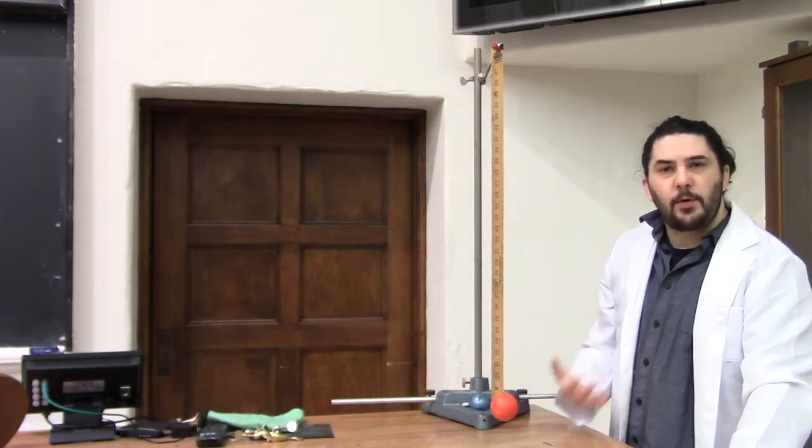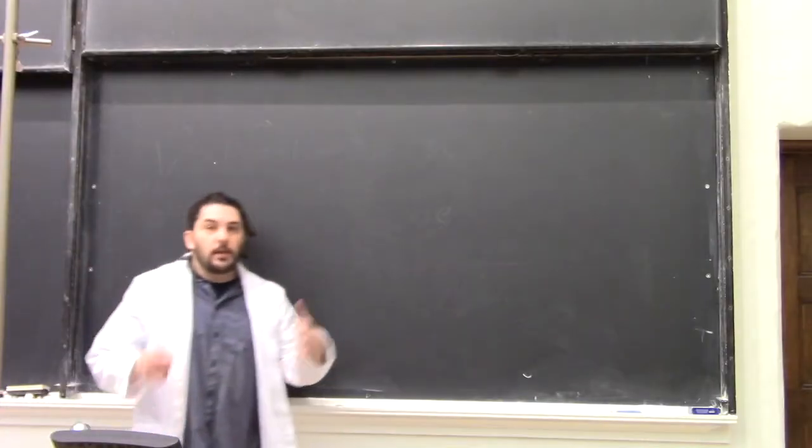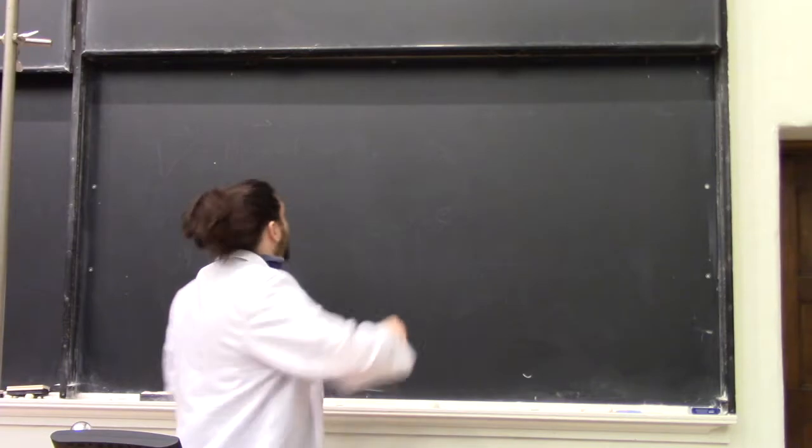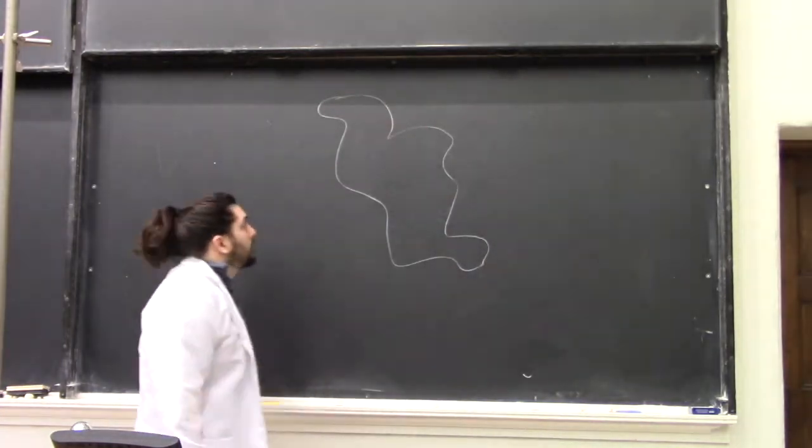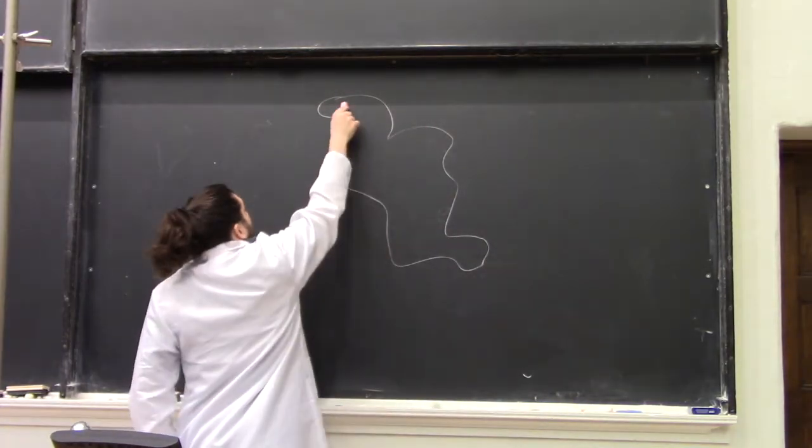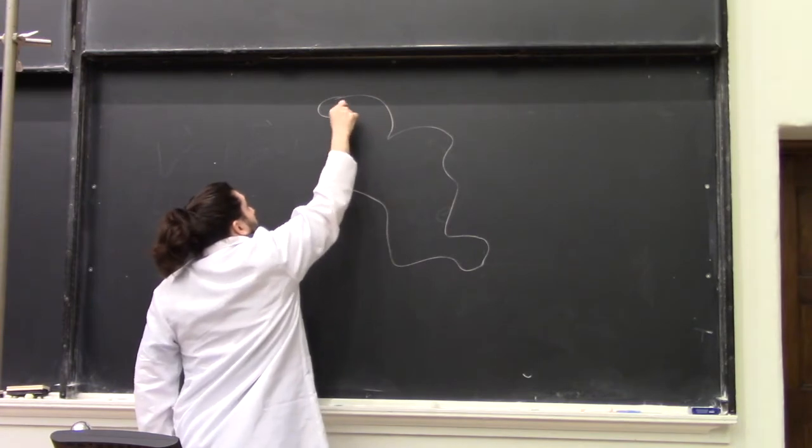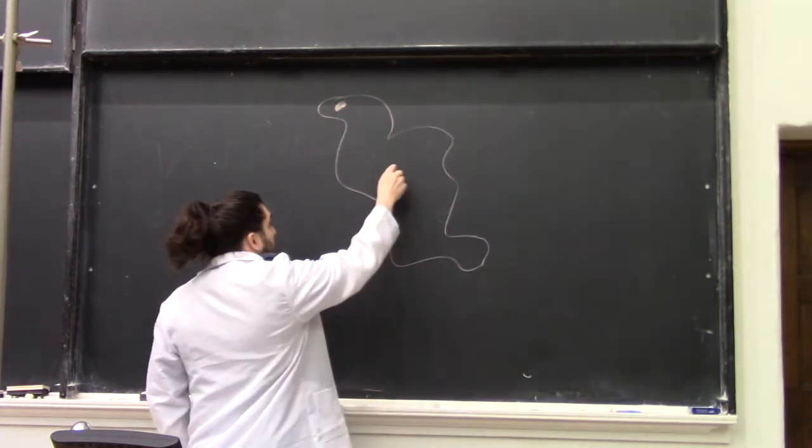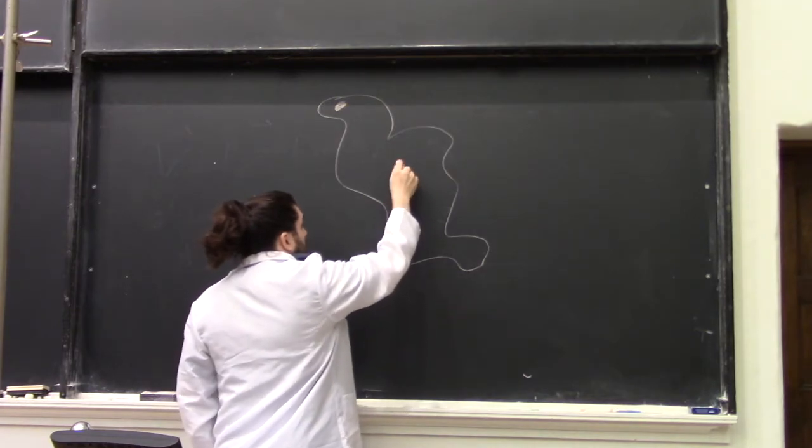So how do we calculate the equivalent simple pendulum? Let's say we have an arbitrary rigid mass as our compound pendulum. We'll hang it from right here, and we'll say we know where the center of mass is, right there.